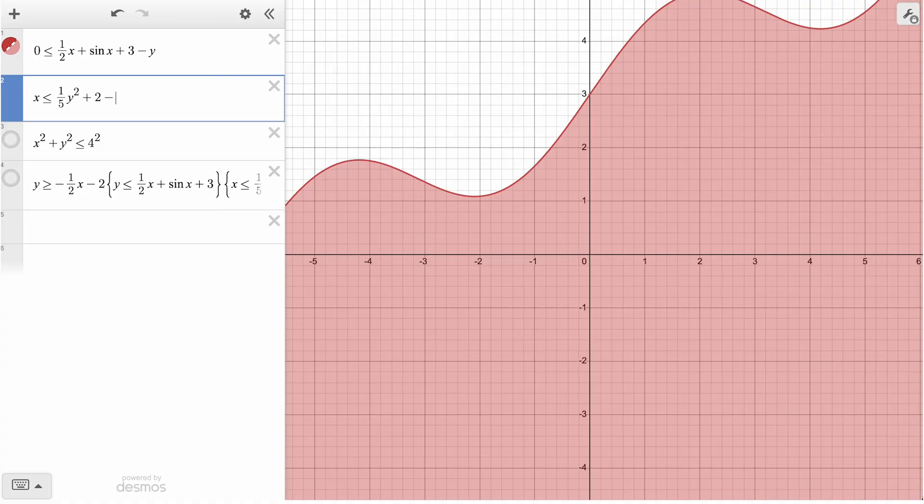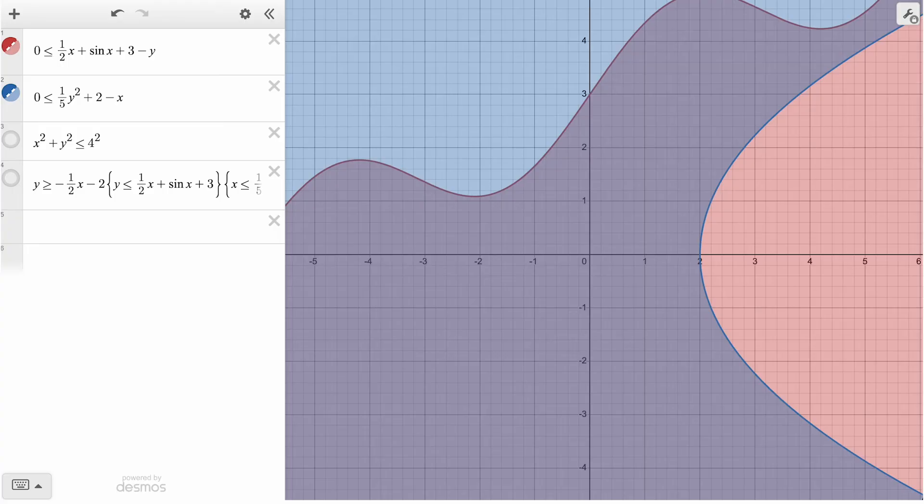For our sideways parabola, we can subtract x from both sides, so we are again left with a zero on the left side, and that same less than inequality. We are shading the region where all the points are positive when plugged into this expression.